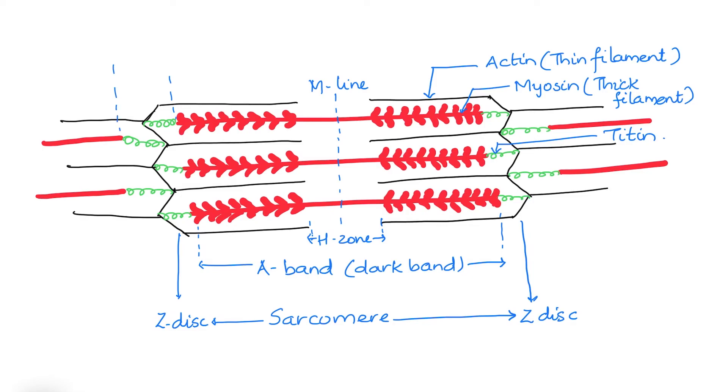The part that contains only actin or thin filament is the I band, or also called the light band. The alternating light and dark bands thus give a striated appearance to the muscle.